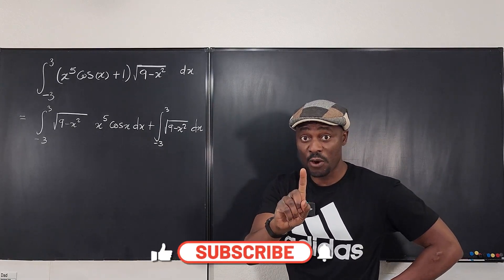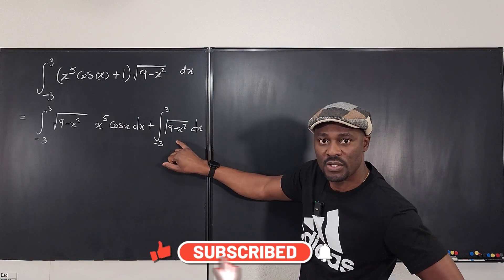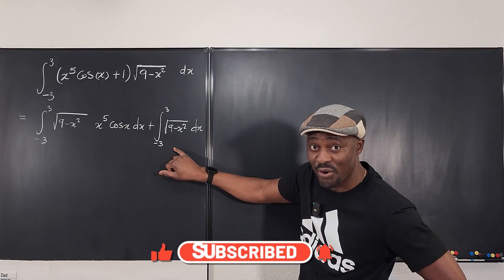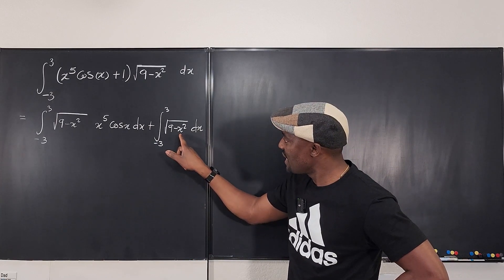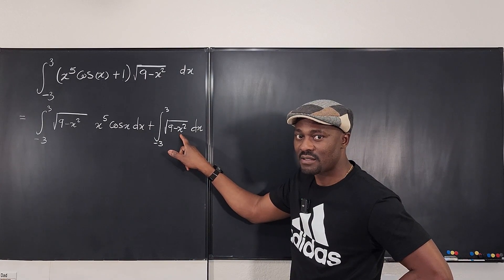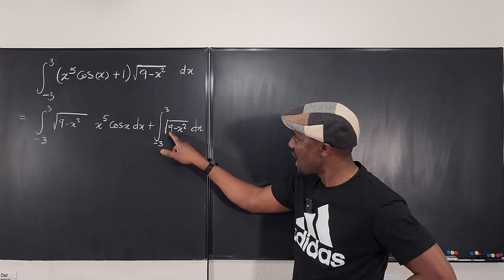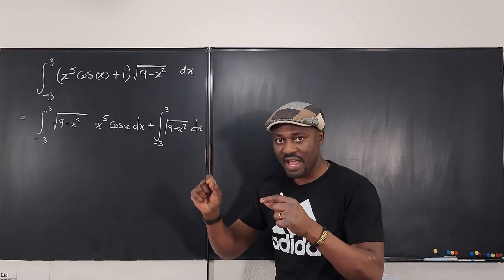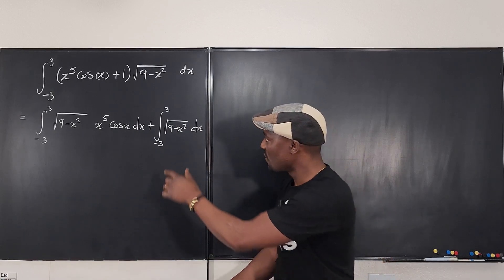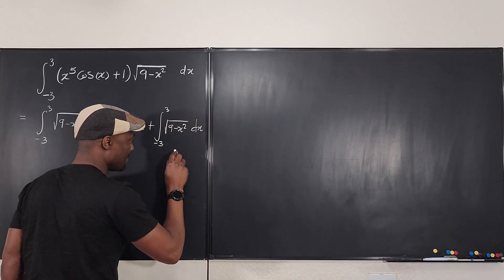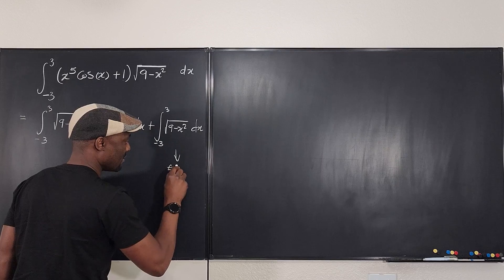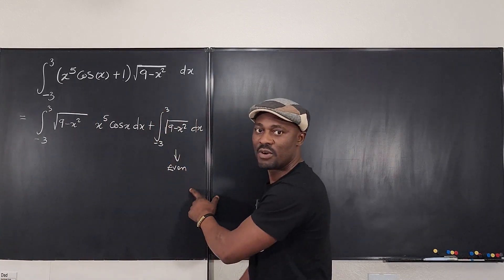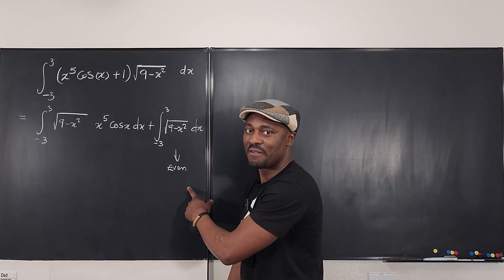I certainly know that √(9 − x²) is not an odd function — this is an even function. How do I know? Because if I plug in negative x instead of x, I'm going to still end up with nine minus x squared, because when you square negative x it becomes x squared again. So this clearly is an even function. There is no trick here; I have to integrate this — there's no way out of it.